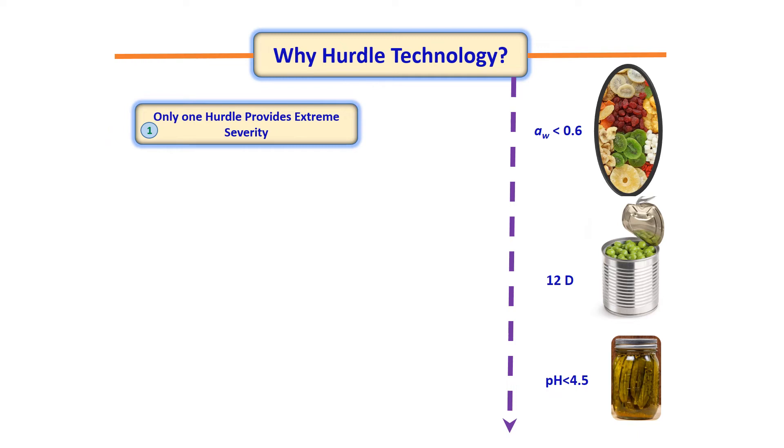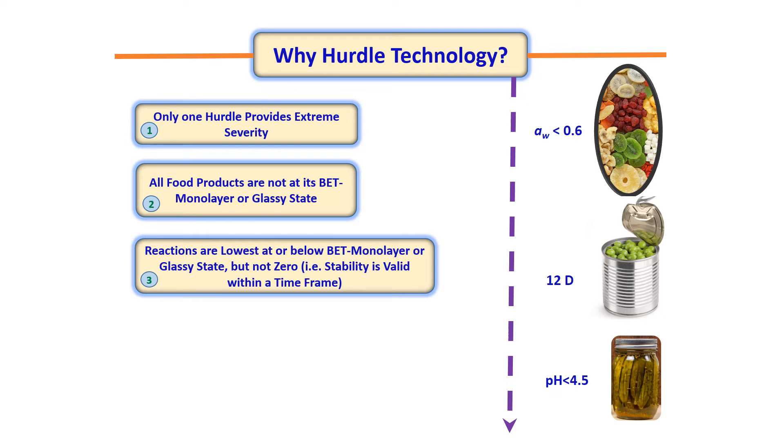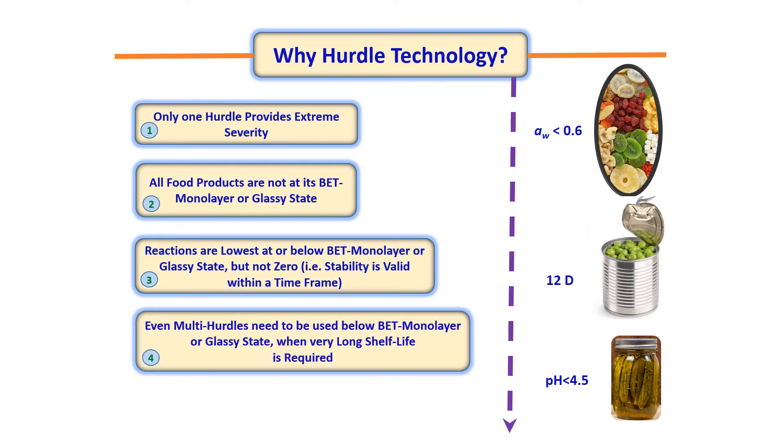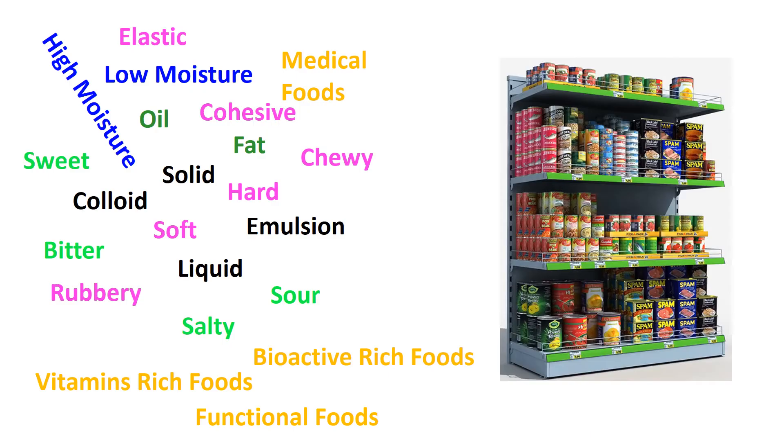Now let's discuss why we need to have hurdle technology. Only one hurdle provides extreme severity. All food products are not at its BET monolayer or glassy state. Reactions are lowest at or below BET monolayer or glassy state, but not zero. That is, stability is valid within a time frame. Even multi hurdles need to be used below BET monolayer or glassy state when very long shelf life is required. Not all foods are below pH 4.5 and water activity less than 0.6 and having 12D. We have diversified food products with varied moisture, structure, taste, and flavor. Therefore, we cannot apply same hurdles for all products. We need to apply hurdles based on the products, thus clear understanding is necessary to select the hurdles in an intelligent way.